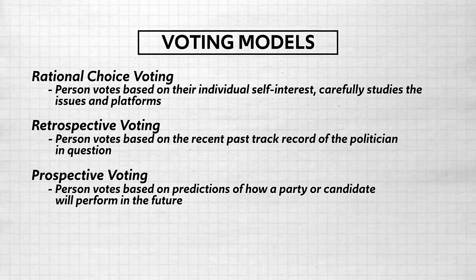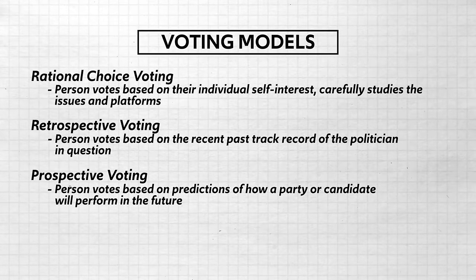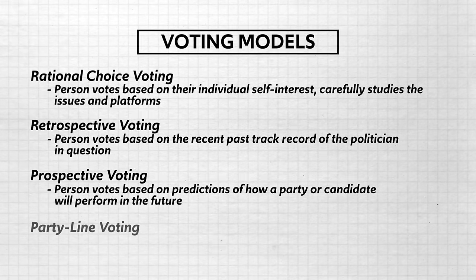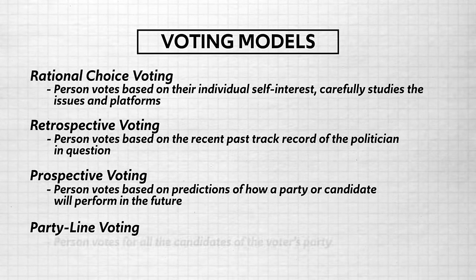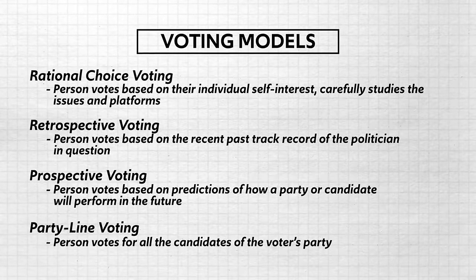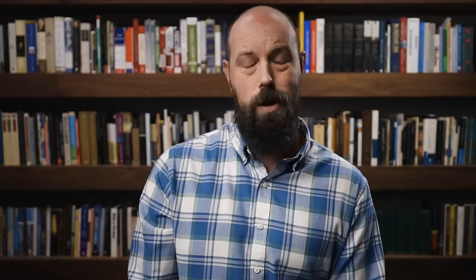And the fourth model for voting behavior is party-line voting. This is when a person votes for all the candidates of their party. 'I'm a Republican and all these people are Republicans, so I'm going to vote for them.' Or 'I'm a Democrat and all these people are Democrats, so let's vote for them.' Well that was easy, and now we've got time to celebrate at a Golden Corral.